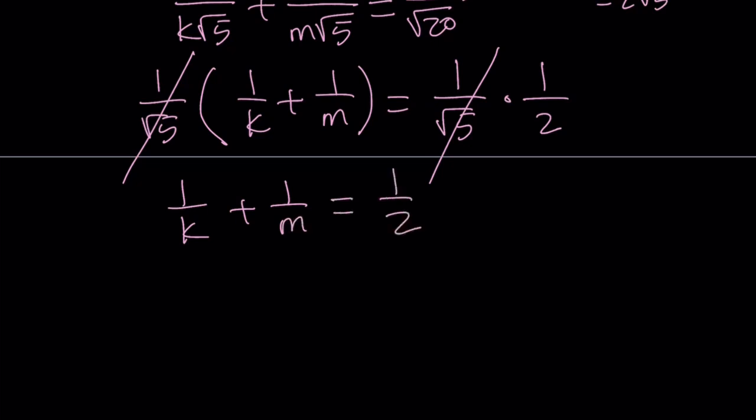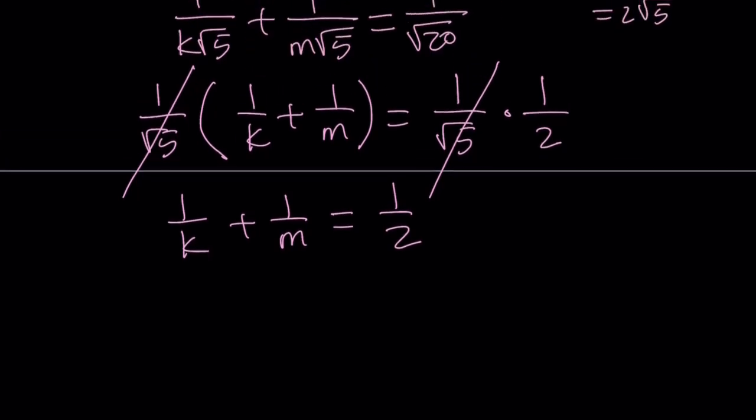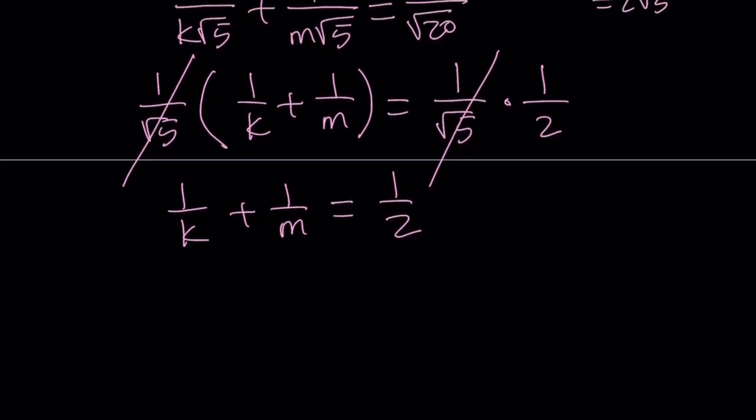Obviously, this equation is interesting in and of itself. But we're going to just back substitute to find the answers. So at this point, you can isolate one of the variables. For example, you can isolate 1 over m.